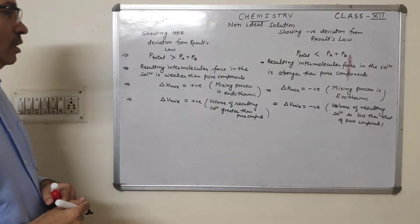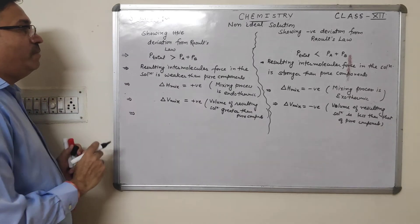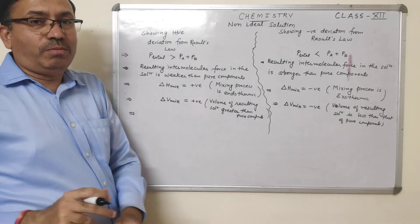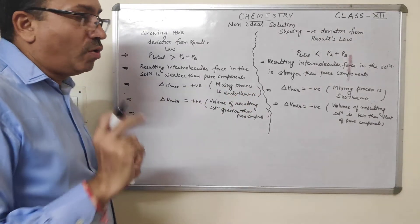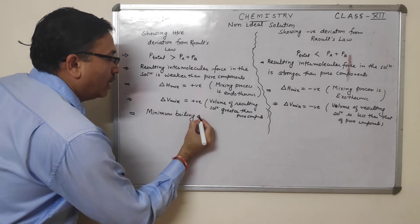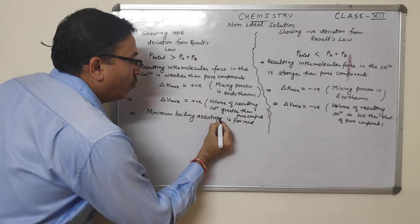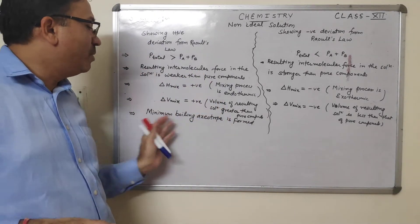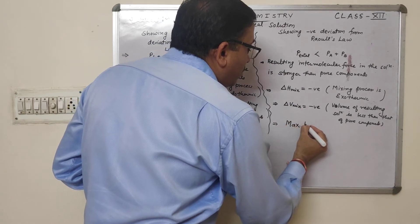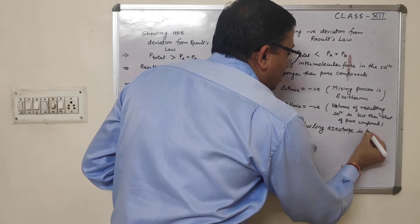Another interesting point: if a solution is showing positive deviation from Raoult's law and forms azeotropes, a minimum boiling azeotrope is formed. In case of negative deviation, a maximum boiling azeotrope is formed. We will cover azeotropes in the next concept.